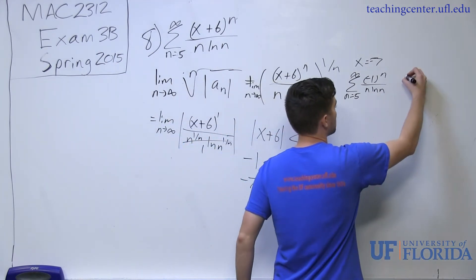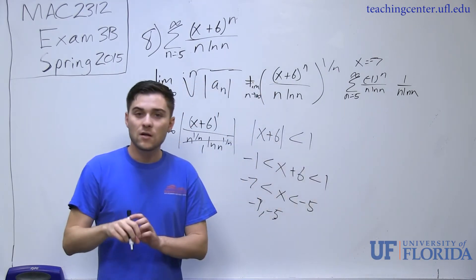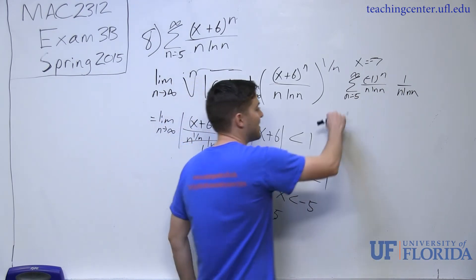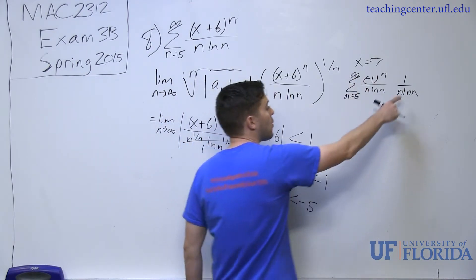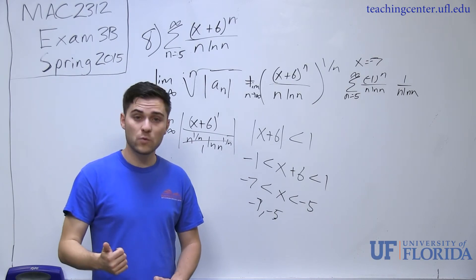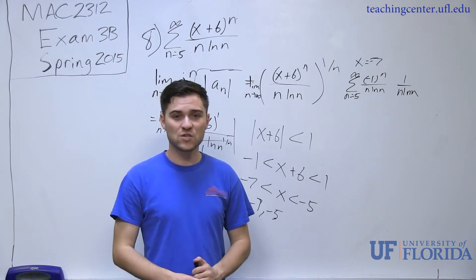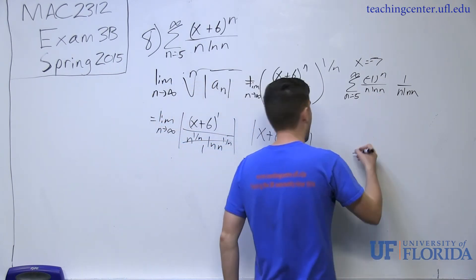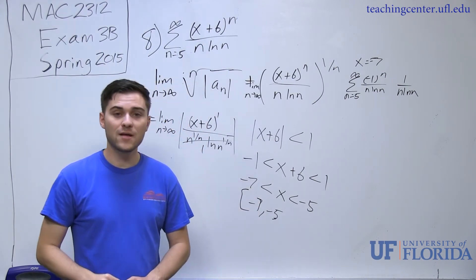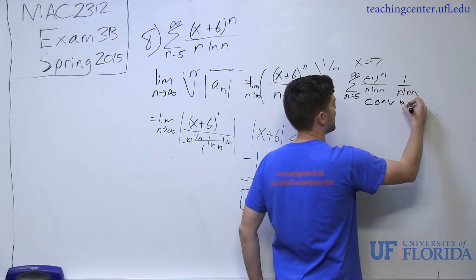Alternating series test says that as long as 1 over n natural log of n has a limit as n approaches infinity of 0 and it's decreasing over time, this series should be convergent. The bottom is growing faster than the top as n approaches infinity, so it is 0. And because the bottom is also growing faster than the top, it should be decreasing as well. In this case, for negative 7, we actually write brackets around it because it is inclusive, because this converges by alternating series test.